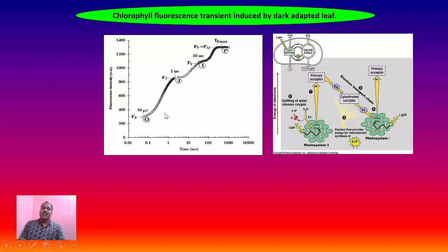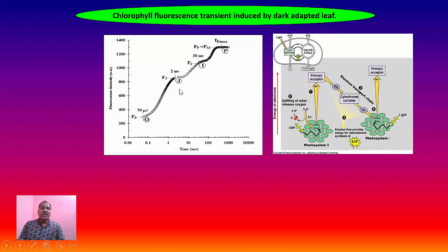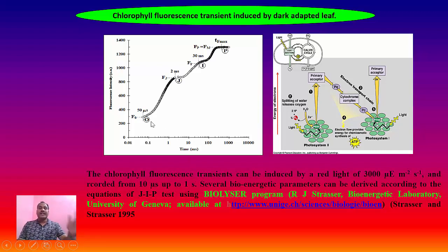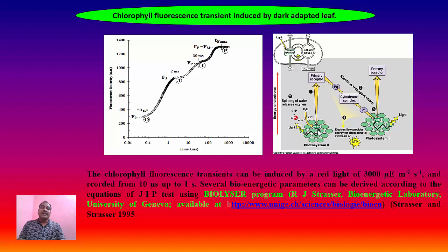Different scientists have given different assumptions regarding the shape of these transients and their relationship to different physiological processes of the photosystems. It has been predicted that the O-J step rise is directly related to the photochemistry of the photosystem — when light falls on the photosystem, electrons are excited and taken by plastoquinone, the primary acceptor of electrons, which is known as photochemistry. The J-to-I step is directly related to oxygen evolution, and the I-to-P step relates to electron transport beyond quinone.